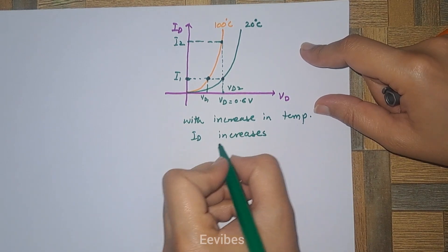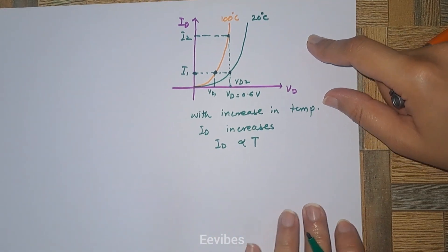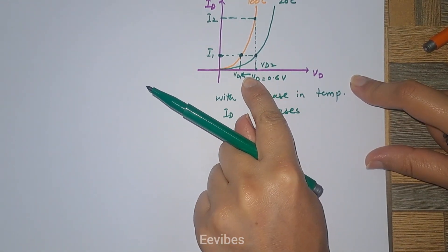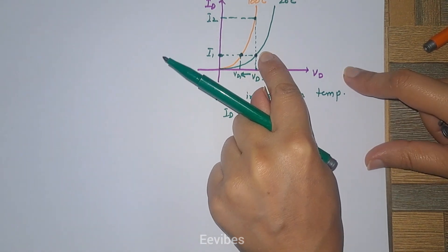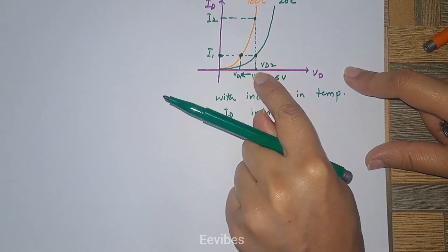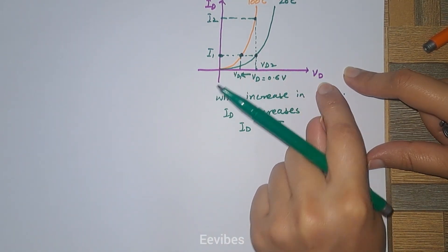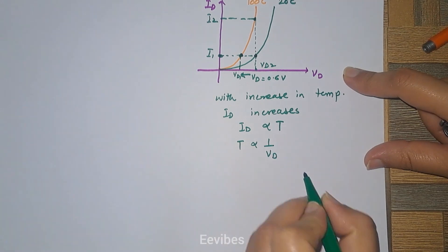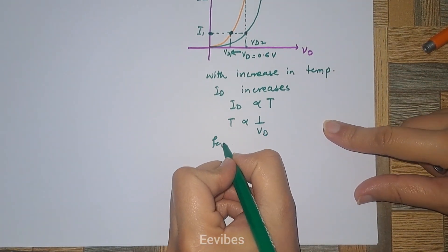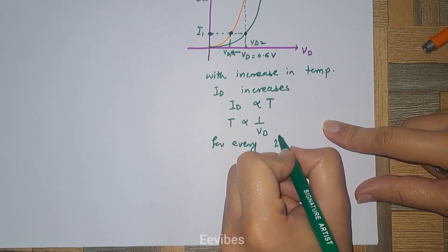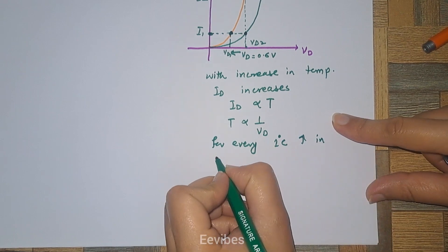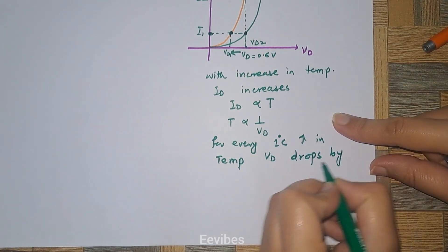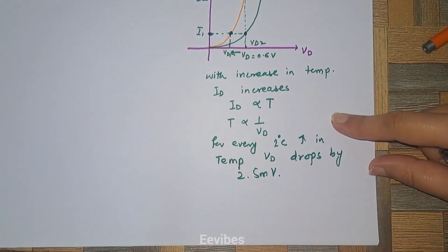With increase in temperature, ID increases, so there is a direct relation between ID and temperature. With the increase in temperature, there is a decrement in the diode voltage. When you increase the temperature from 20 to 100 degrees centigrade, you move towards the left on the curve, so the diode voltages are reduced — an inverse relation between temperature and diode voltage. It is said that for every 1 degree centigrade rise in temperature, VD drops by 2.5 millivolts.